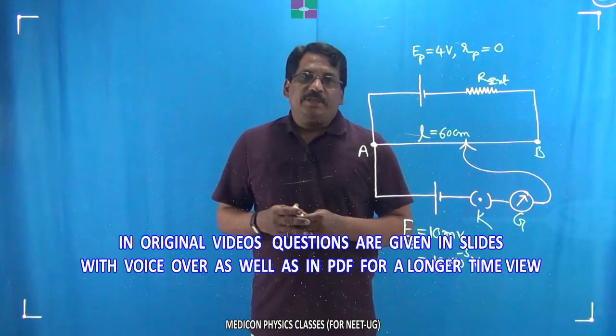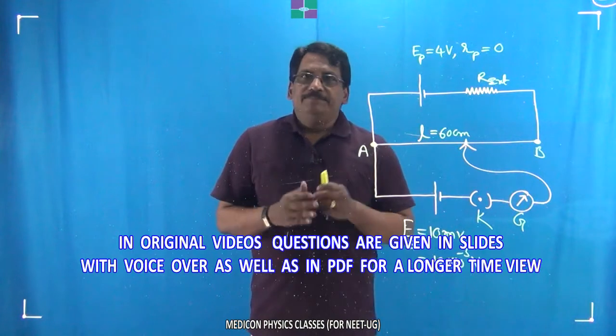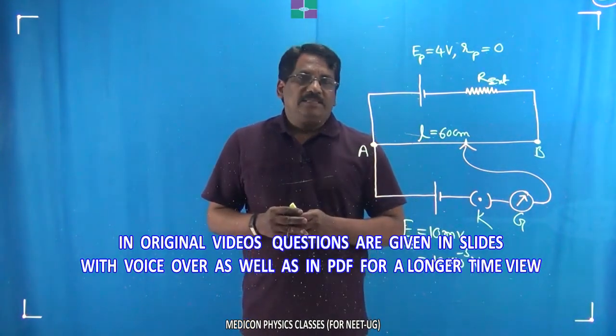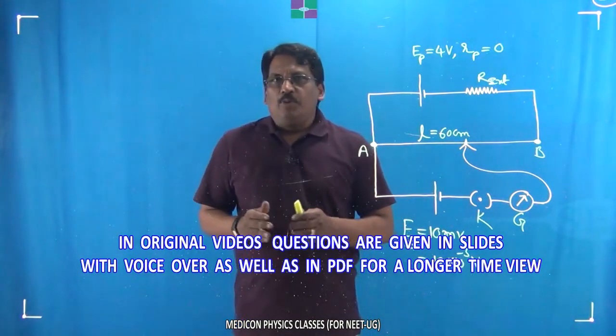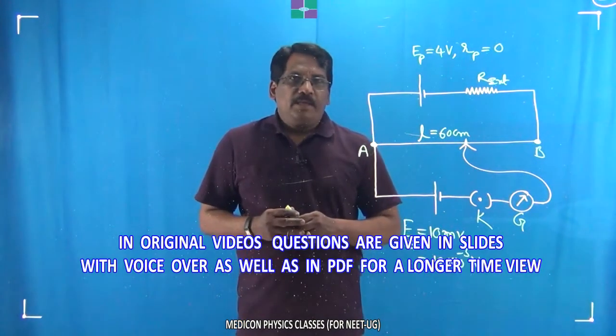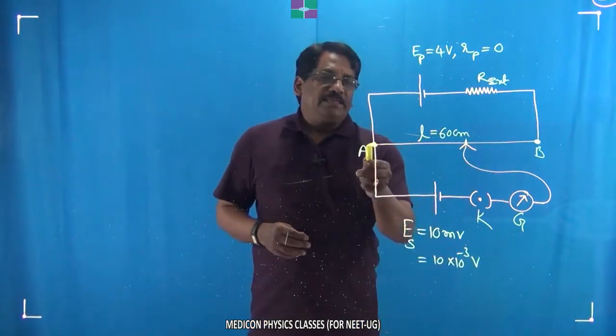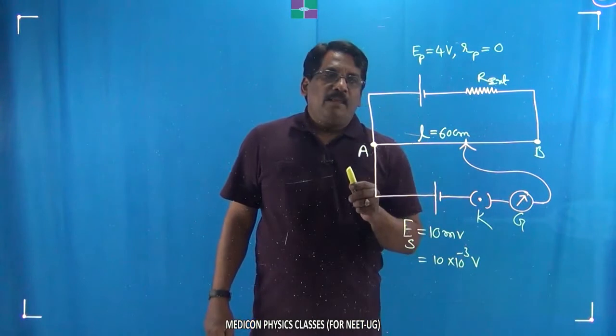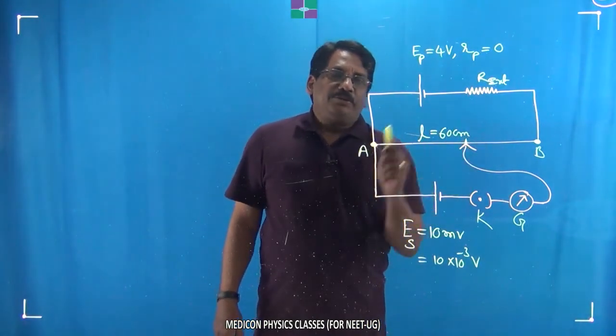Let's look at the solution for this comprehensive question based on the working of a potentiometer. Here in this potentiometer, the wire is given to be of total length 200 centimeters, and in the primary circuit, a